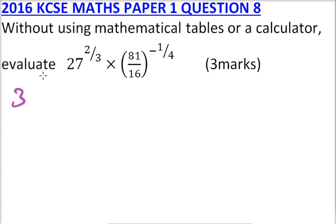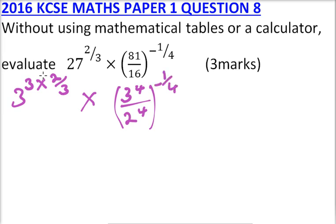So 27 is the same as 3 cubed, and you multiply by 2 over 3. You multiply by, now here, 81 is the same as 3 to power 4, divided by 16 is 2 to power 4, into bracket, to power minus a quarter.